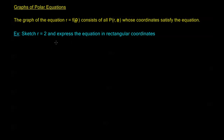Let's sketch r equals 2 and express the equation in rectangular coordinates. First we need a polar axis, and I'll mark out 1 and 2 along it. Now r equals 2 means I need to sketch all points that satisfy this equation — all points in the polar coordinate system that have an r of 2. Remember, all that r is is the distance from the origin.